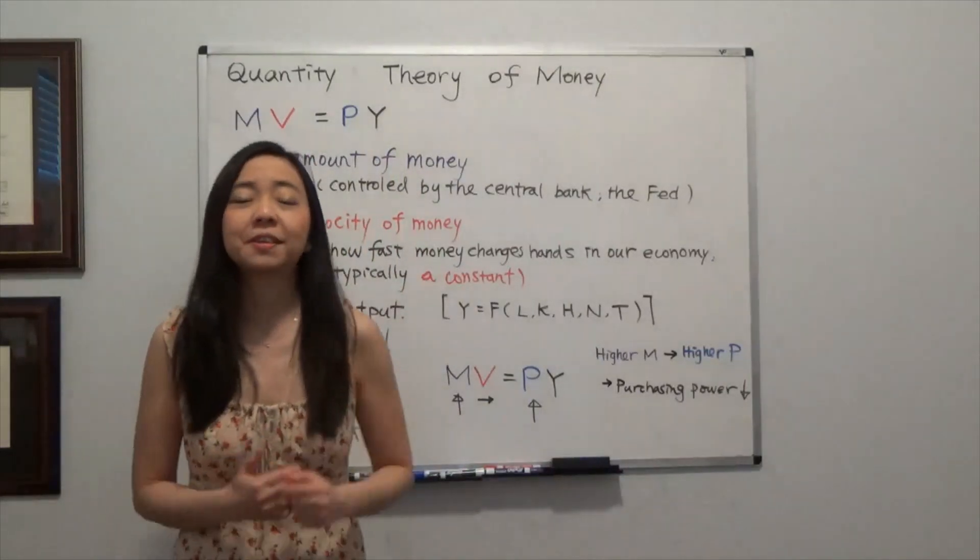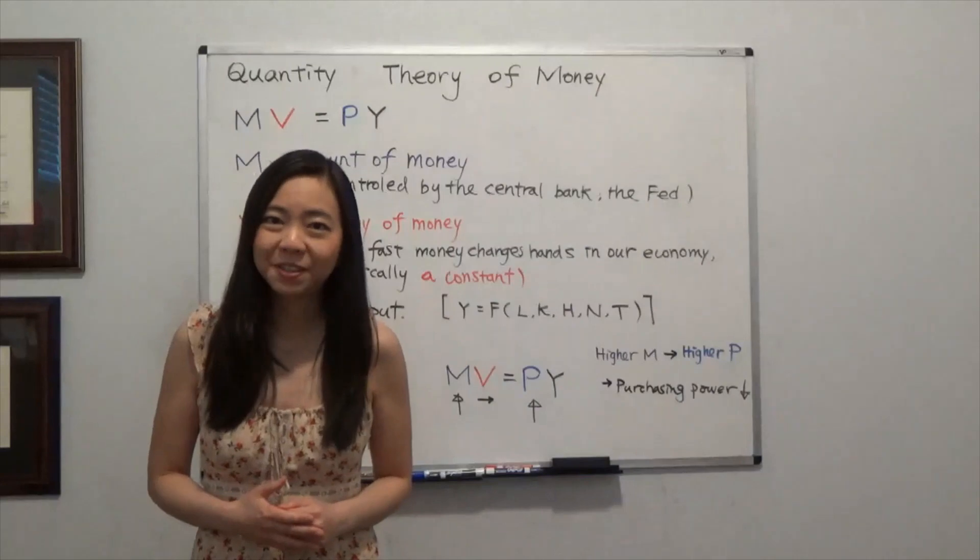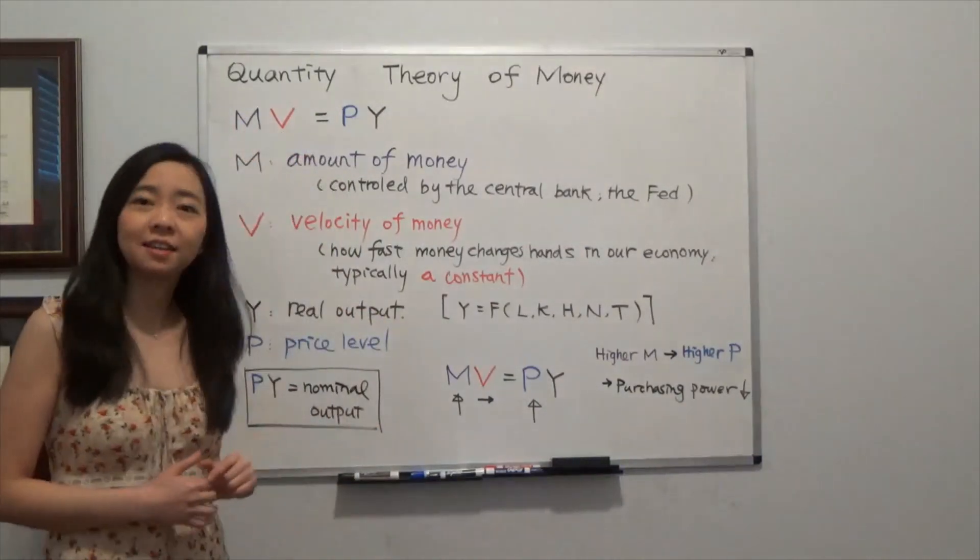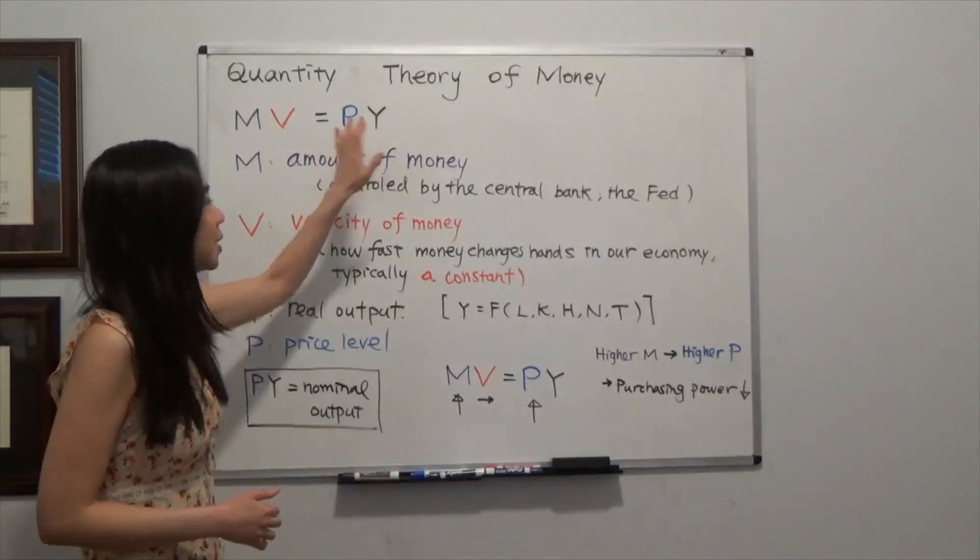So the quantity theory of money can be summarized by this equation: M times V is equal to P times Y.